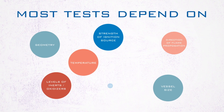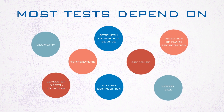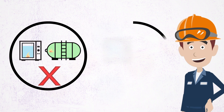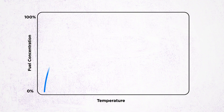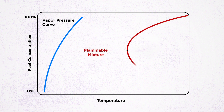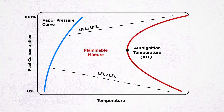Most of these tests are dependent on these factors. It is important to test the conditions that are as close as possible to actual process conditions for the most applicable results. As we look at this graph, we see how four of the five tests are related to each other as functions of temperature versus fuel concentration. The remaining test will be discussed later in this video.